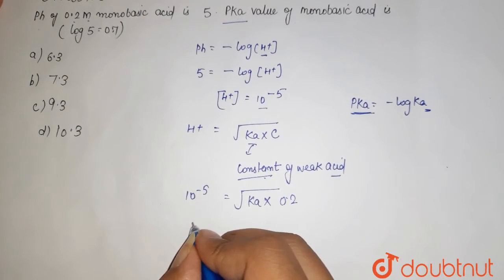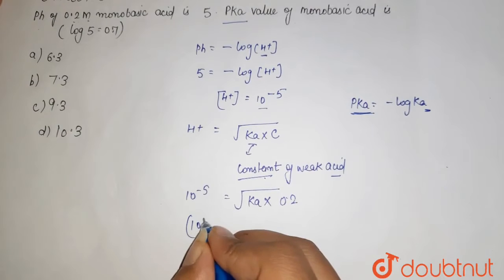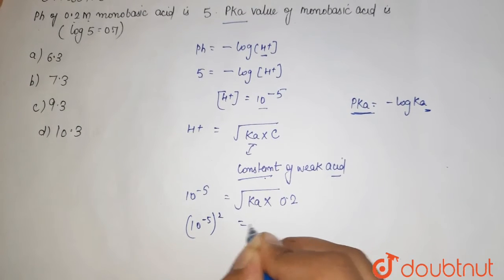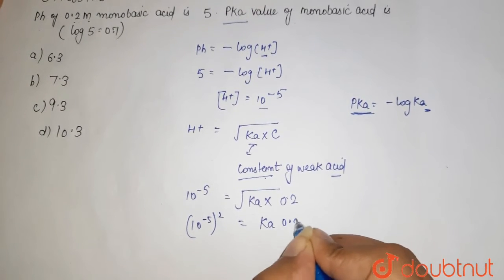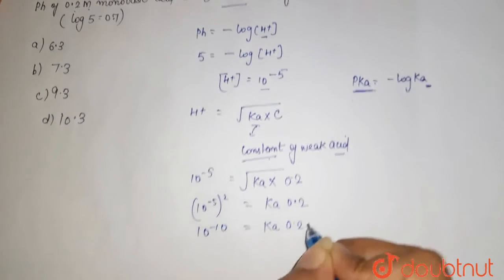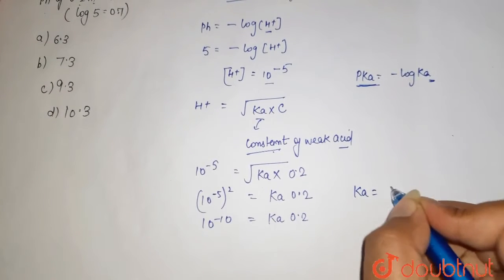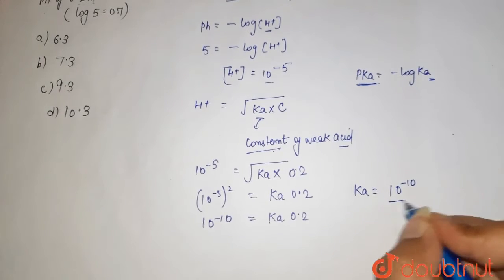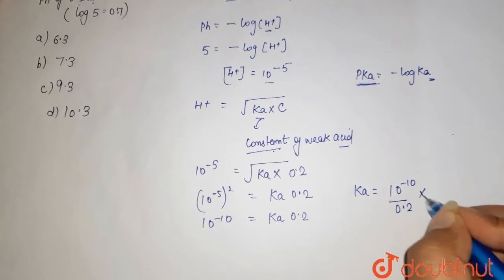so squaring both sides, it becomes - and this will become Ka times 0.2. It is 10 to the power minus 10 equal to Ka times 0.2. So here your Ka equal to - this will come down so it will go up, it is 2.